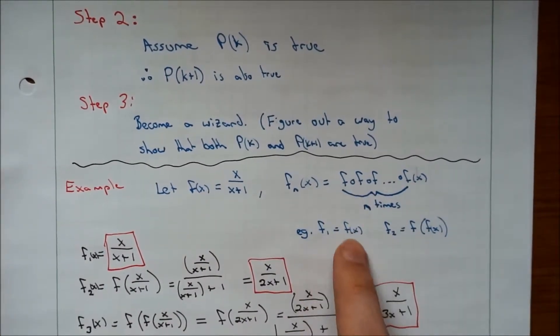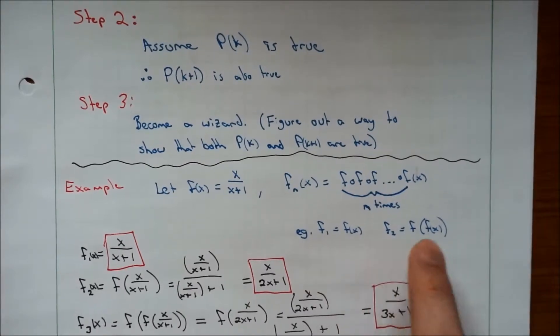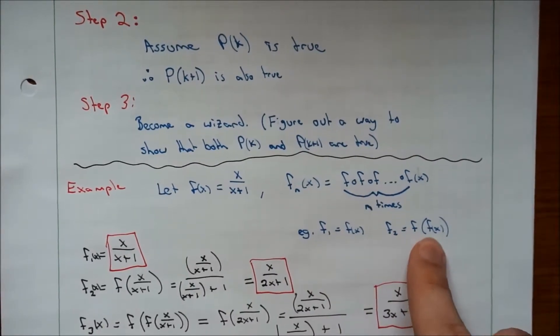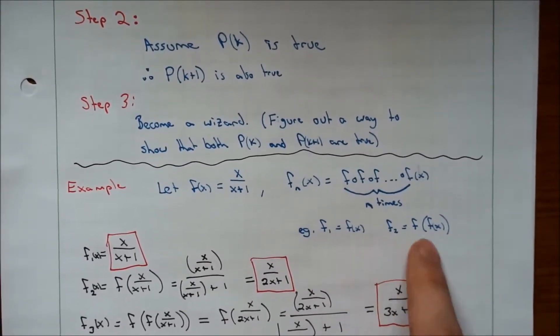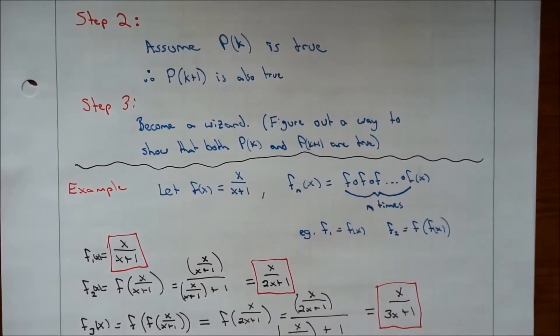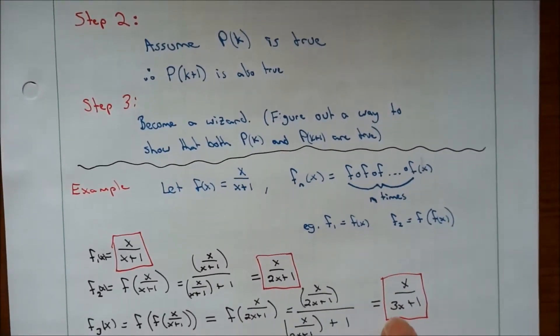So f_1 is just f(x), f_2 would be f of f(x), f_3 would be f of this.